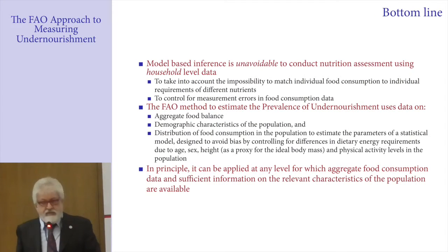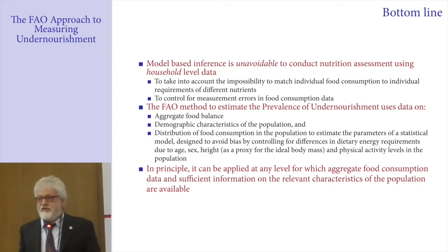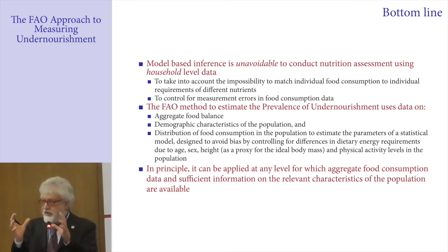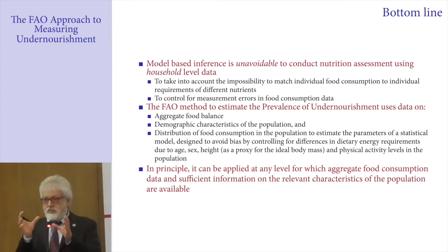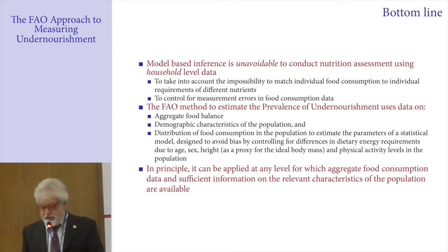In principle, the method can be applied at any level — whenever you have a population on which you have these three pieces of information, you can apply the FAO method. To the extreme, even a household is a population, a group of people. So the method could also be applied to establish the probability that a member of the household is undernourished.